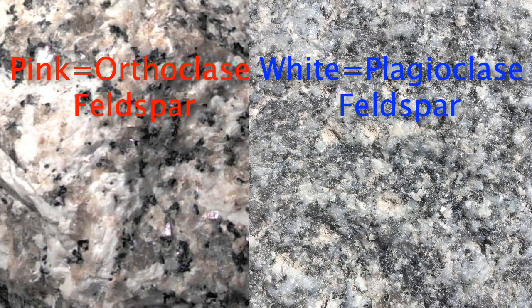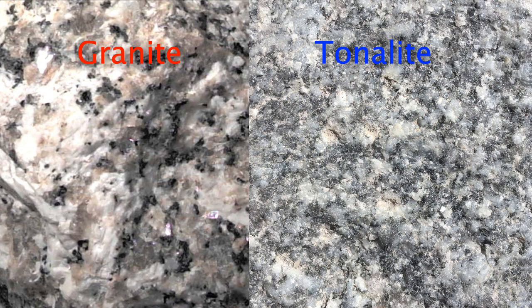That gives dacite its gray color, whereas rhyolite has a pink color. The intrusive version of dacite is tonalite, whereas the intrusive version of rhyolite is the pink granite, with the pink feldspars giving it that color.